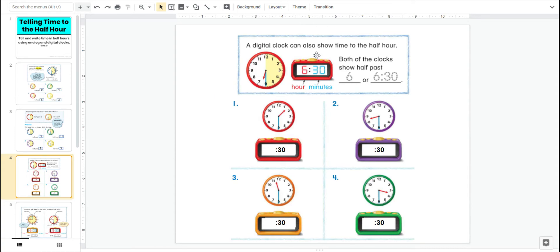Let's talk about a digital clock. It says a digital clock can also show time to the half hour. Both of the clocks show half past six or we can call it 6:30. So look here. The hour hand is between the seven and the six. So the long hand's on the six, which means it's 6:30. The digital clock says the hour in the front, six, and the minutes behind, 30.